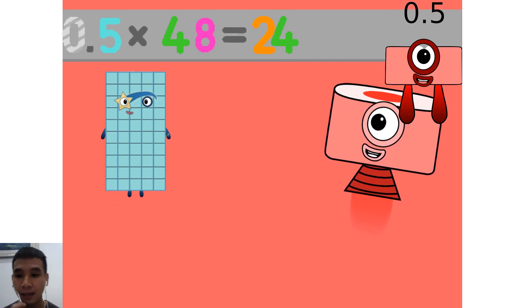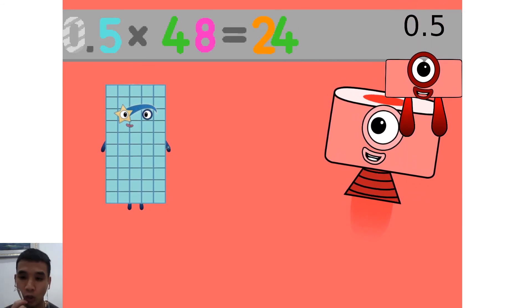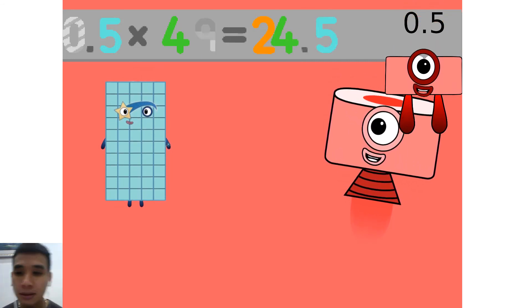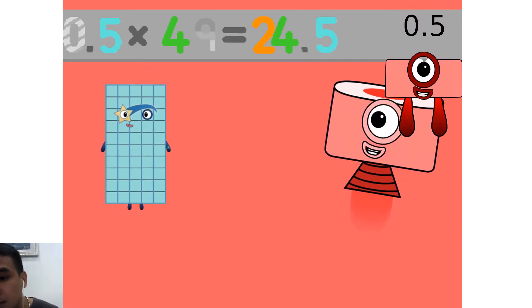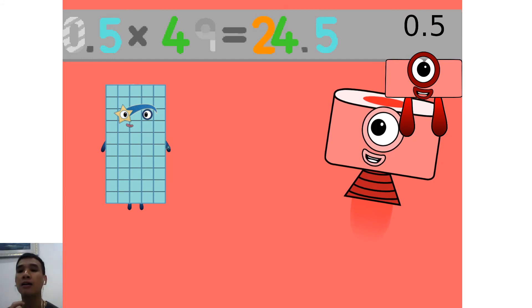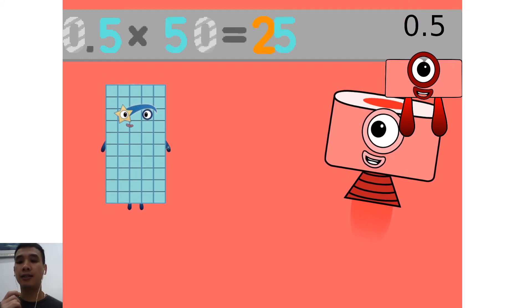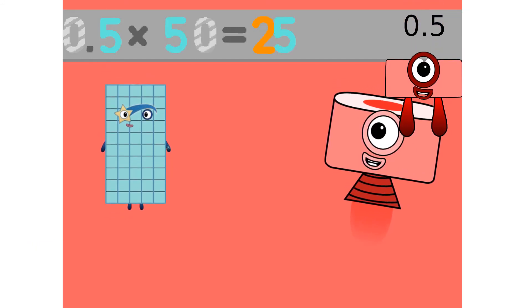0.5 times 48 equals 24. 0.5 times 49 equals 24.5. 0.5 times 50 equals 25.